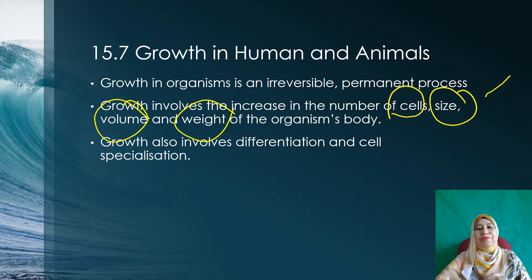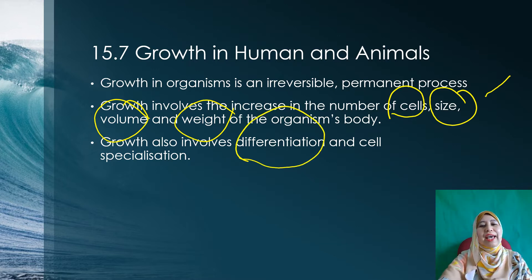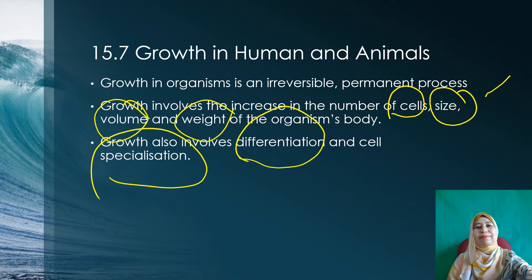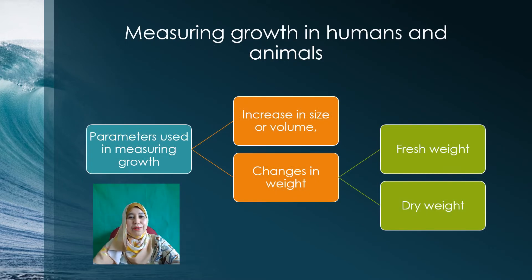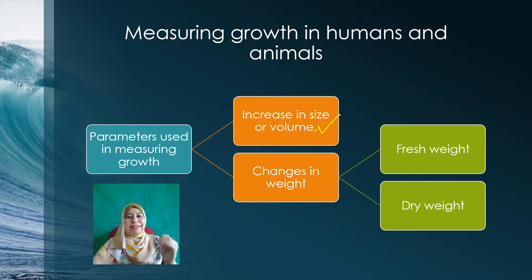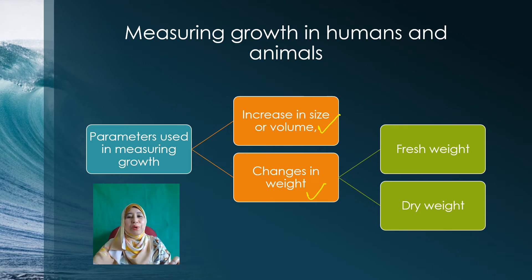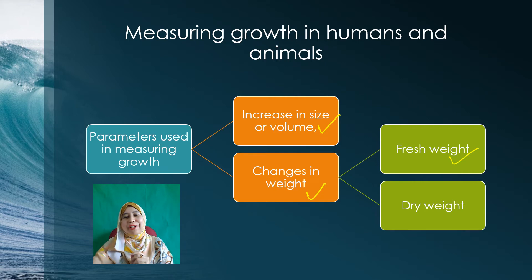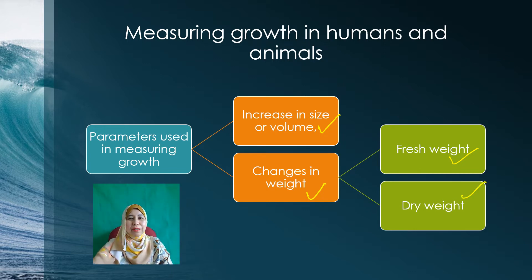Growth also involves the process of differentiation and cell specialization. The parameters used in measuring growth include the increase in size or volume, or the changes in weight. For changes in weight, we can use either the fresh weight — the normal parameter — or the dry weight of the organism. For dry weight, we have to extract the moisture out from the organism.